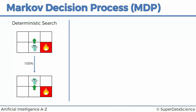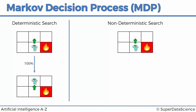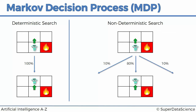On the other hand, non-deterministic search is when our agent says it wants to go up but there are actually a couple of options. For example, there could be three options — and we're going to look at an example with three options, though it's not limited to three. It could be four or more depending on the problem. In our case, with an 80% chance he does go up.